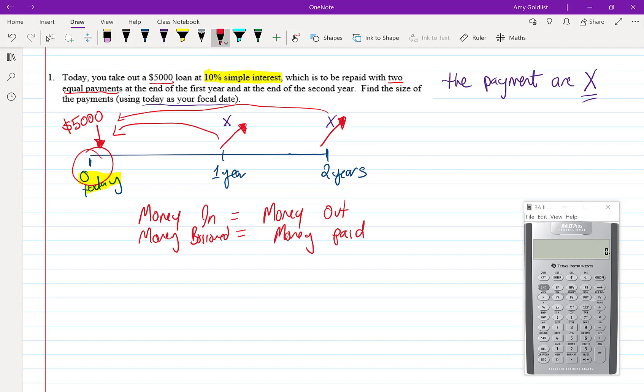So let's start with that money that we borrowed. We borrowed $5,000 and the $5,000 isn't moving at all so it gets to stand alone exactly where it is. That's going to be equal to this first payment of X.